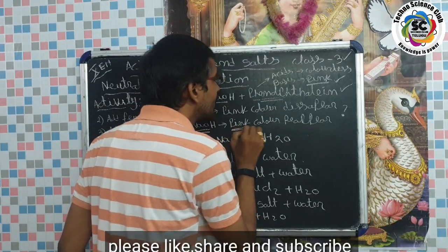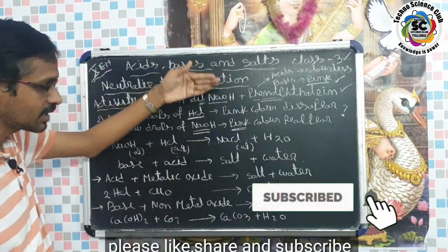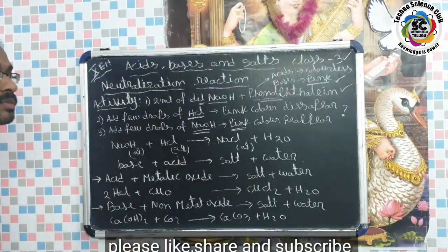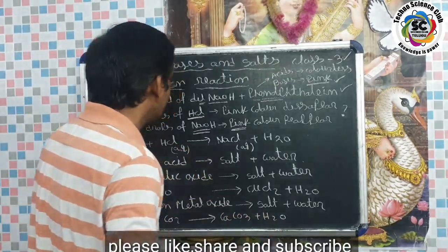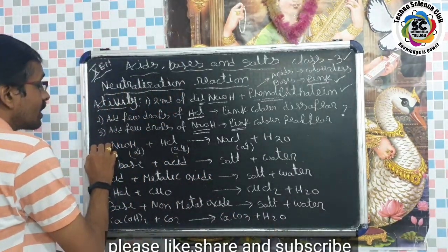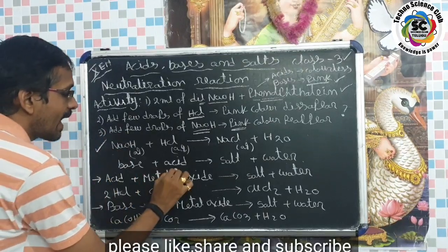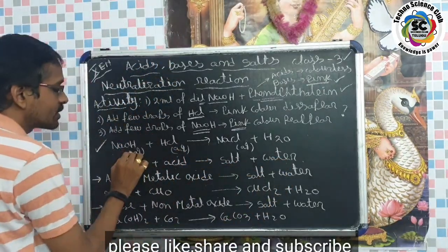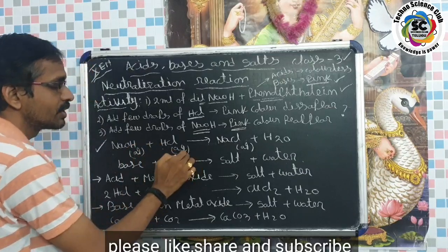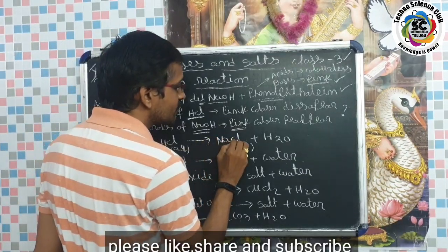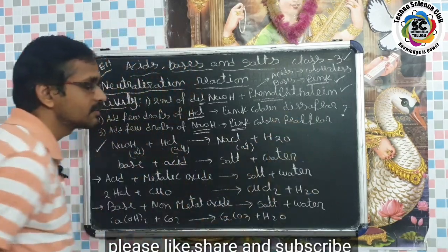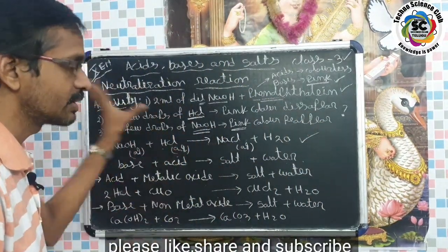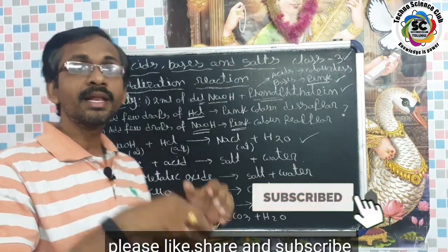After adding NaOH again, the solution turns pink once more. So: first we have a basic solution — pink color — then adding HCl makes it neutral and colorless. The equation for this neutralization reaction is: NaOH (aqueous) + HCl → NaCl (aqueous salt) + H₂O. This is the neutralization reaction. Now let's talk about neutralization in daily life.